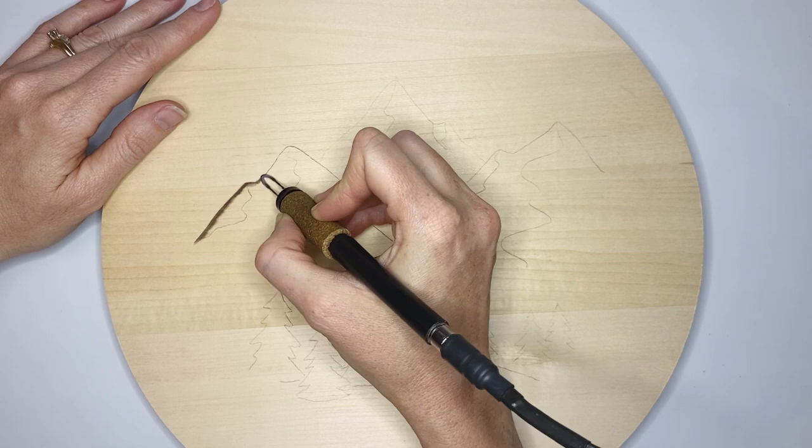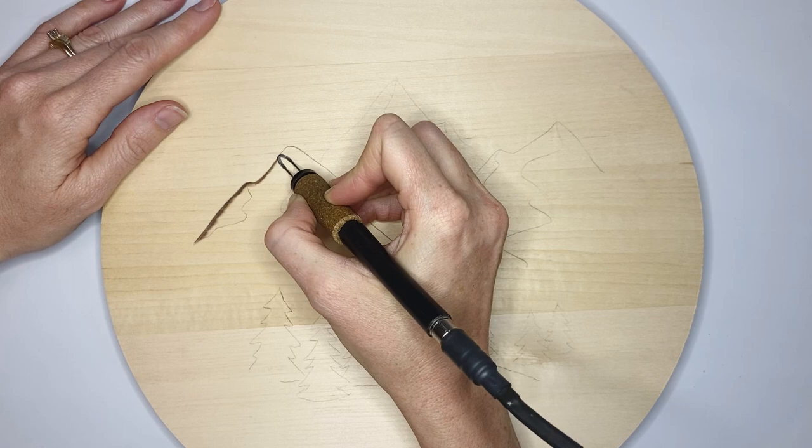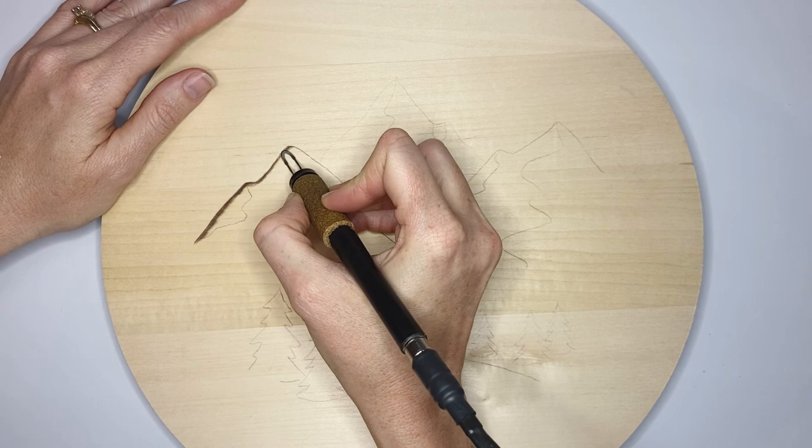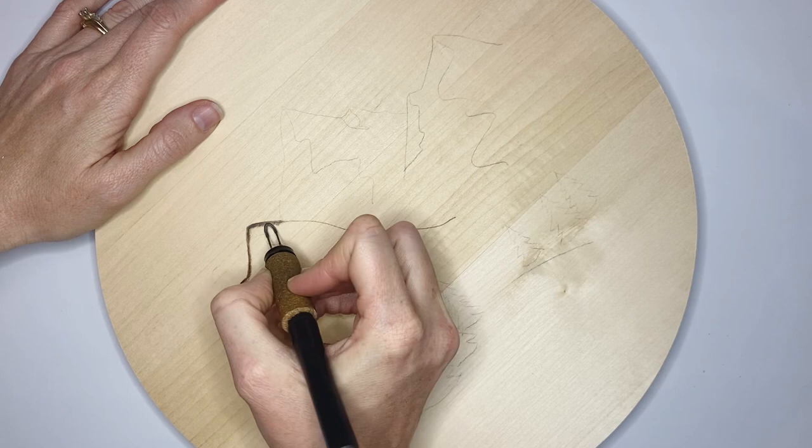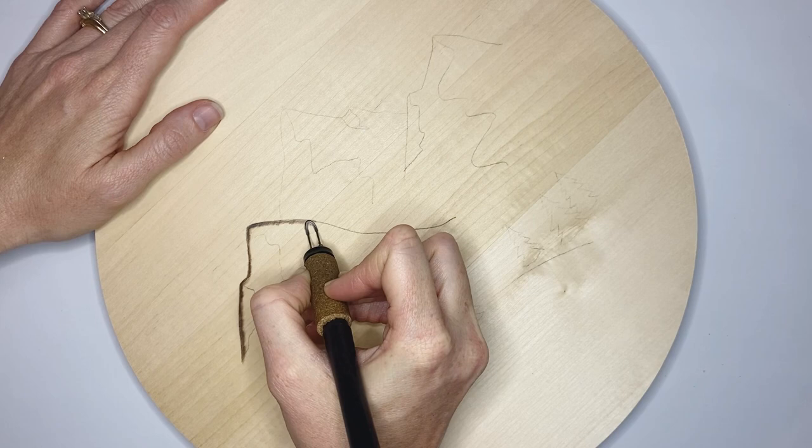So for me, I am going to turn up the heat a little bit so I can work at a faster pace. And again, you're keeping that sharp edge on the outside of the mountain and the soft edge on the inside.